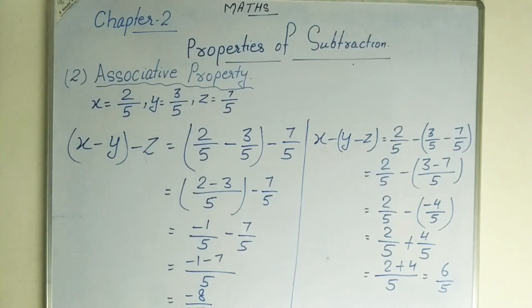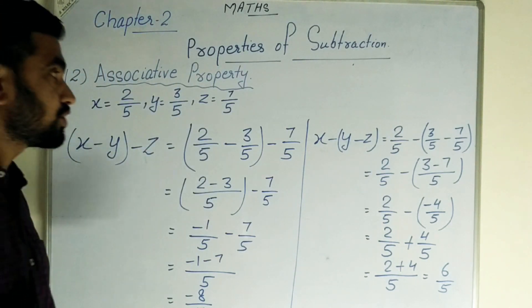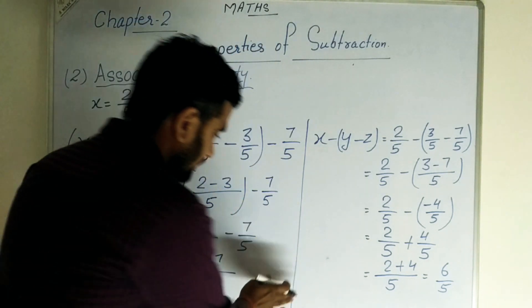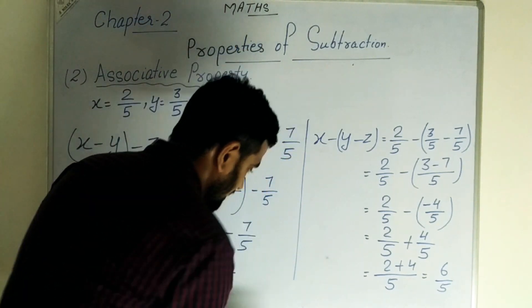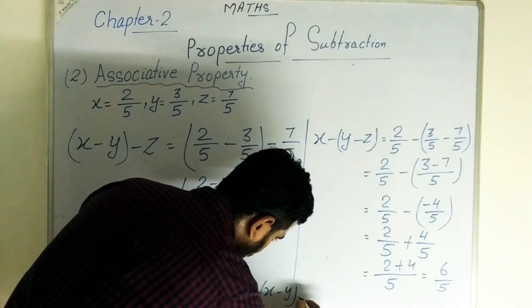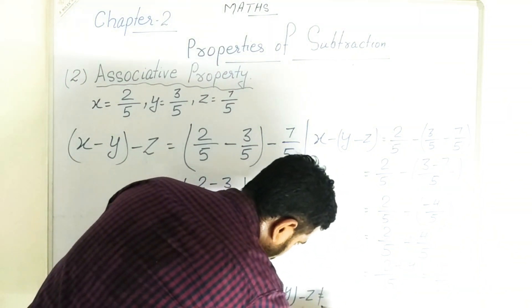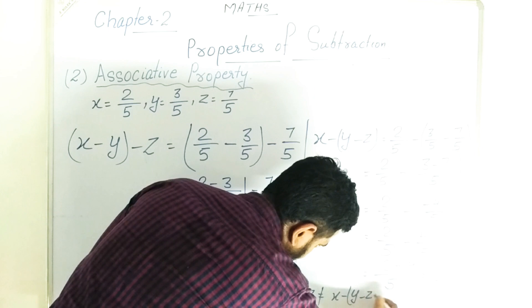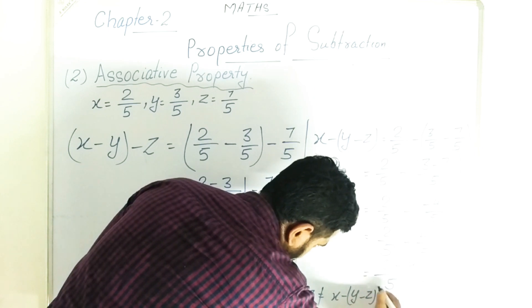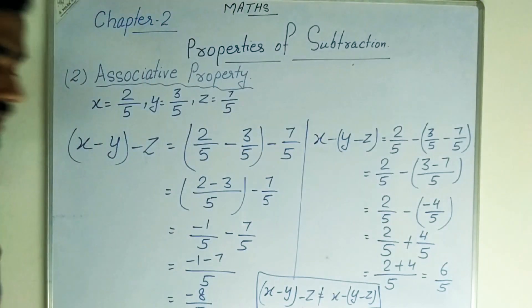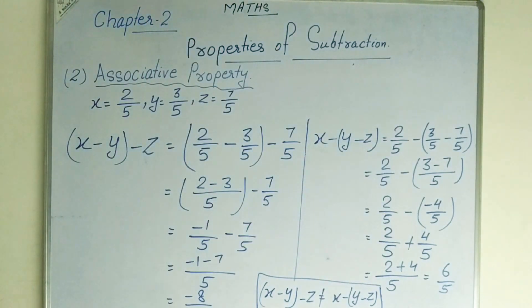So the result is 6 by 5. Is 6 by 5 equal to minus 8 by 5? No. That is why associative property does not hold — it is not true for subtraction. Therefore x minus y minus z is not equal to x minus the bracket y minus z.